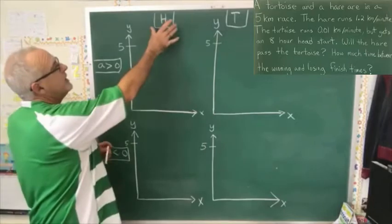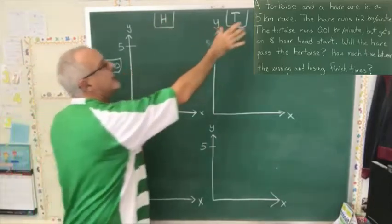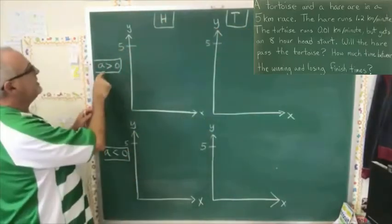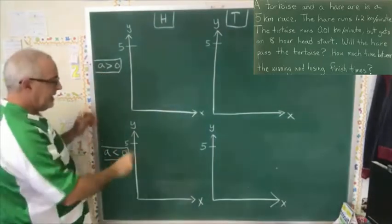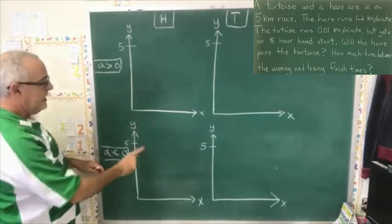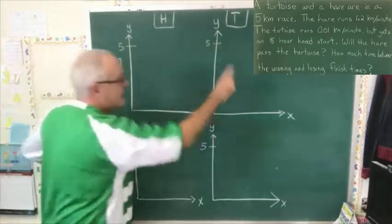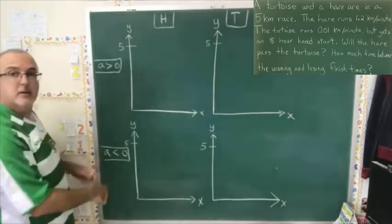Here we're going to have graph for the hare and graph for the tortoise, but that's with a slope greater than zero, a positive slope. And down here we're going to have a graph for the hare and a graph for the tortoise, but a is less than zero, it's a negative slope.